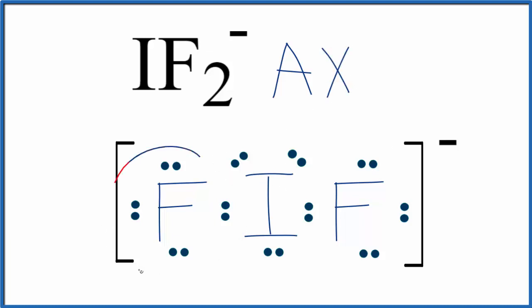X, that's the number of atoms bonded to the iodine. We have two, two of those fluorine atoms. And then E, that's the number of lone pairs. We have one, two, three. These are our lone pairs. So we have AX2E3.